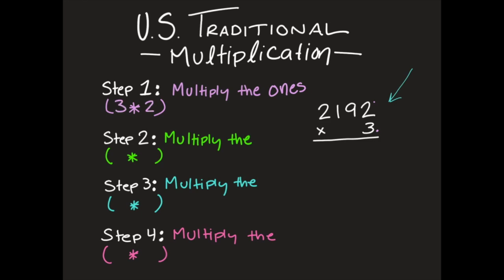Really I'm doing three times two. Three times two is going to give me six, so I'm going to go ahead and put that in the ones column.